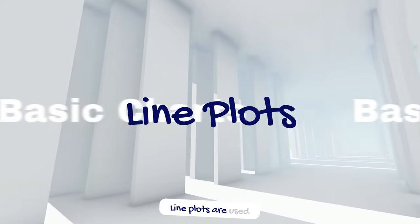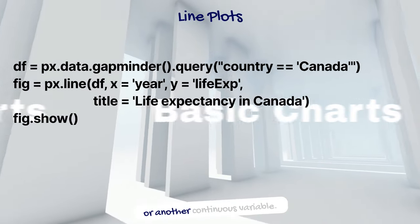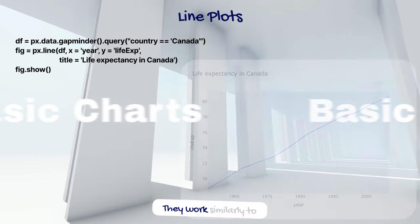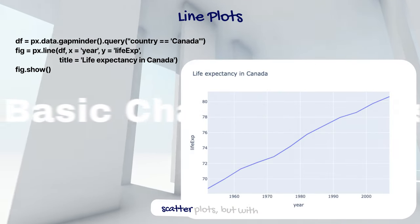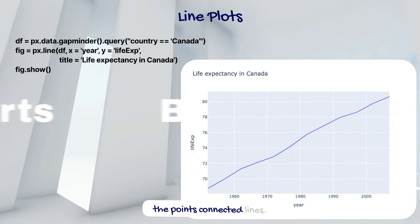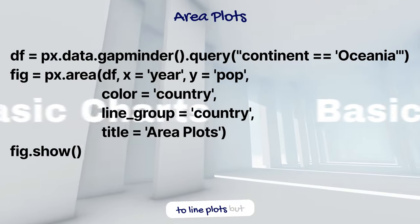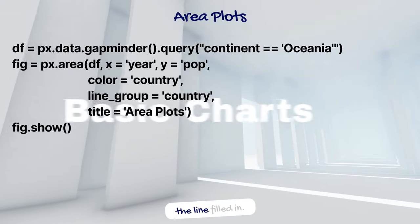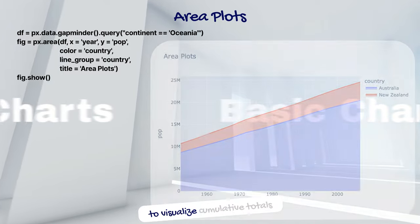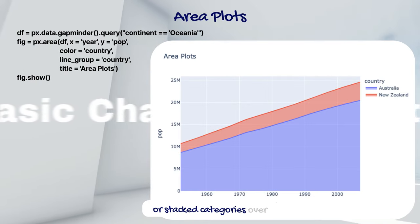Line plots are used to visualize how a variable changes over time or another continuous variable. They work similarly to scatter plots but with points connected by lines. Area plots are similar to line plots but with the area under the line filled in, and are often used to visualize cumulative totals or stacked categories over time.